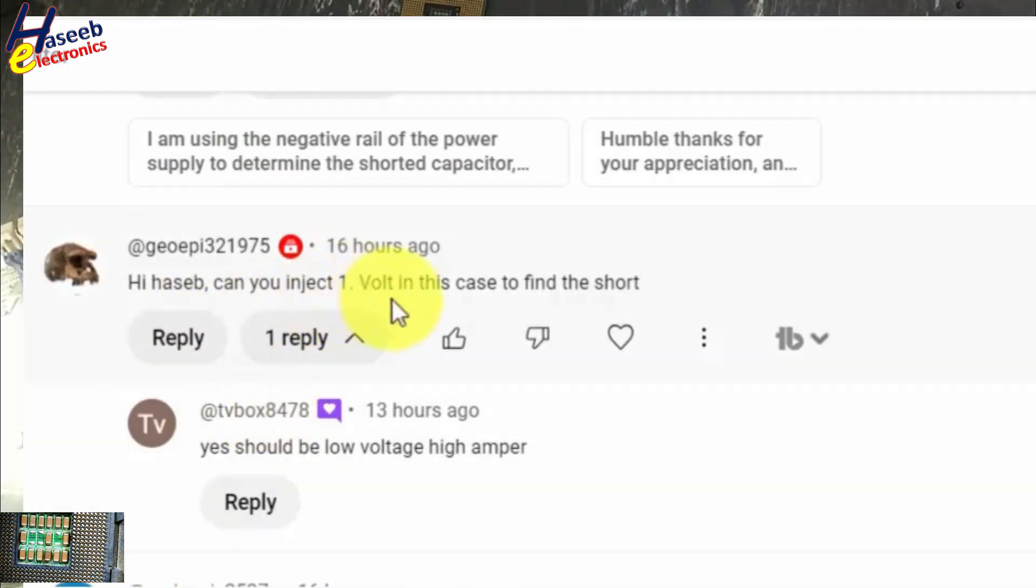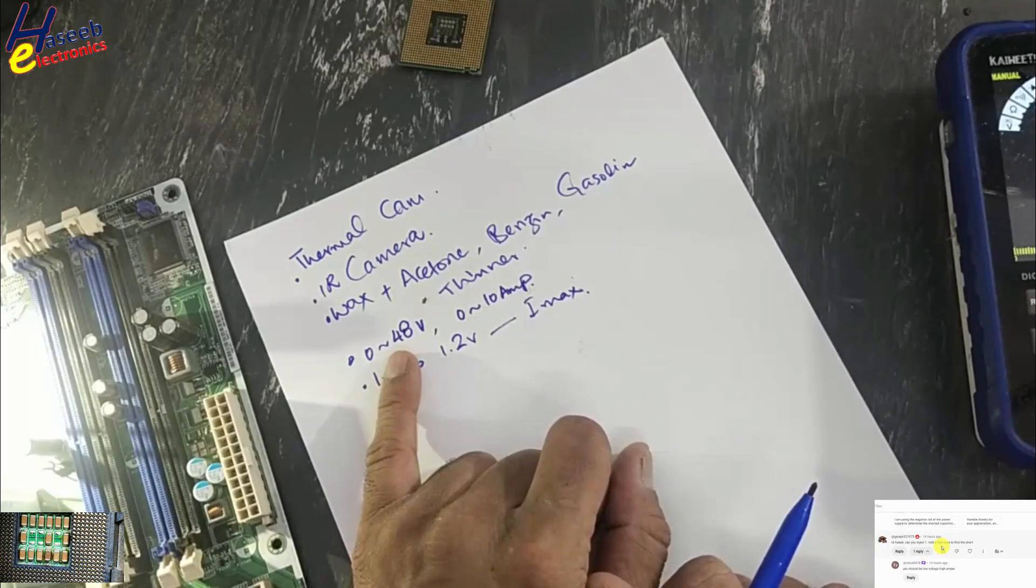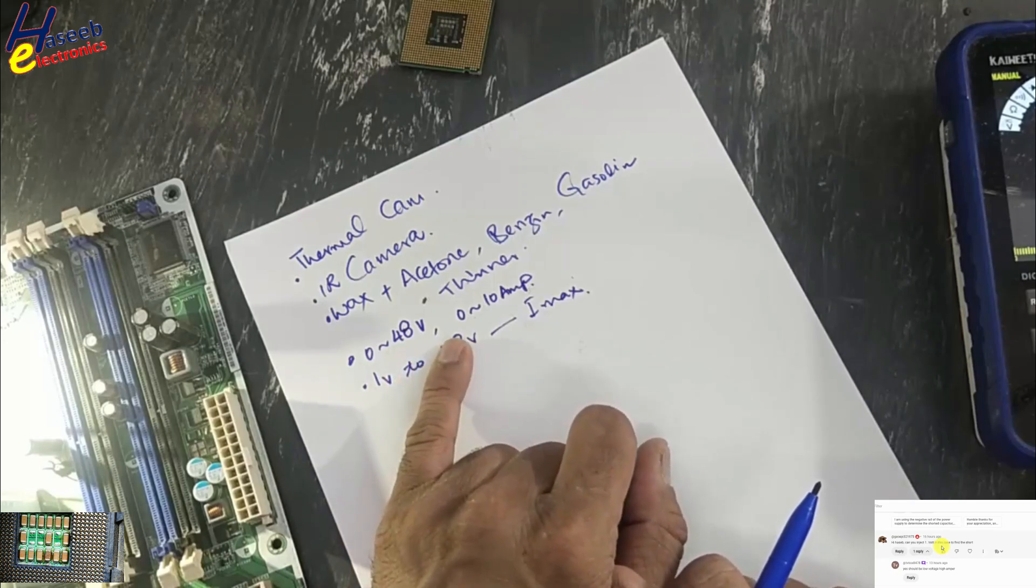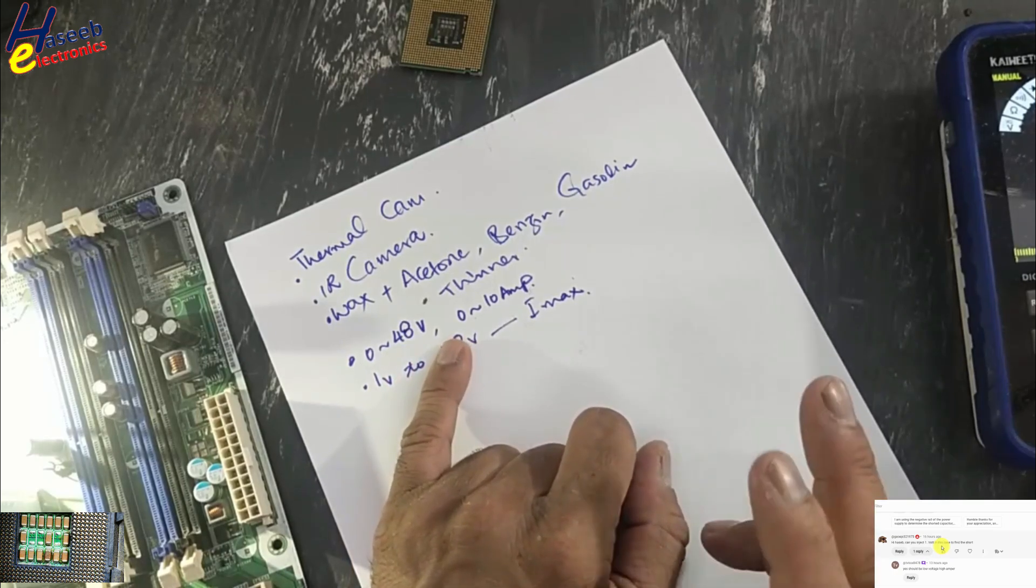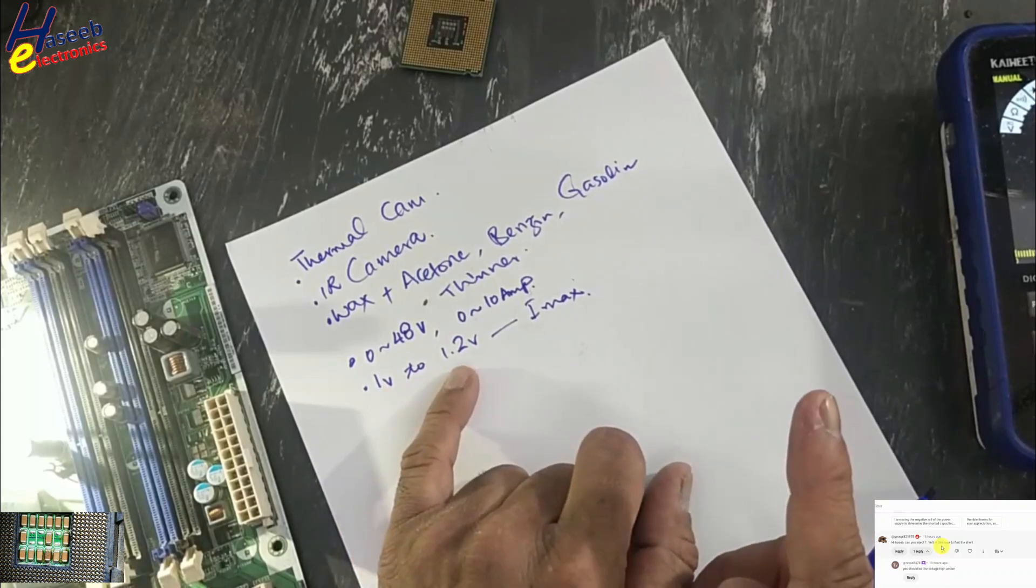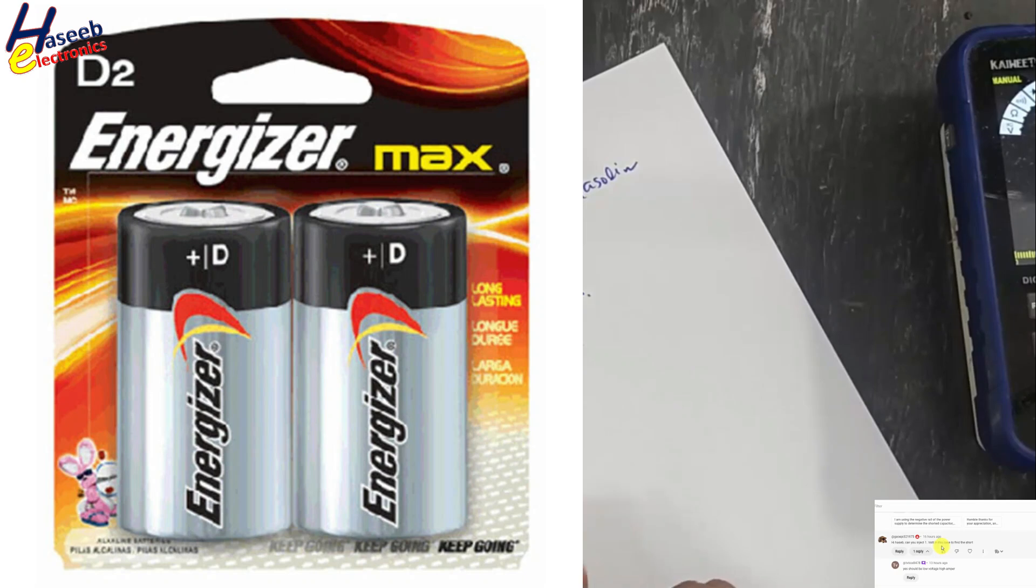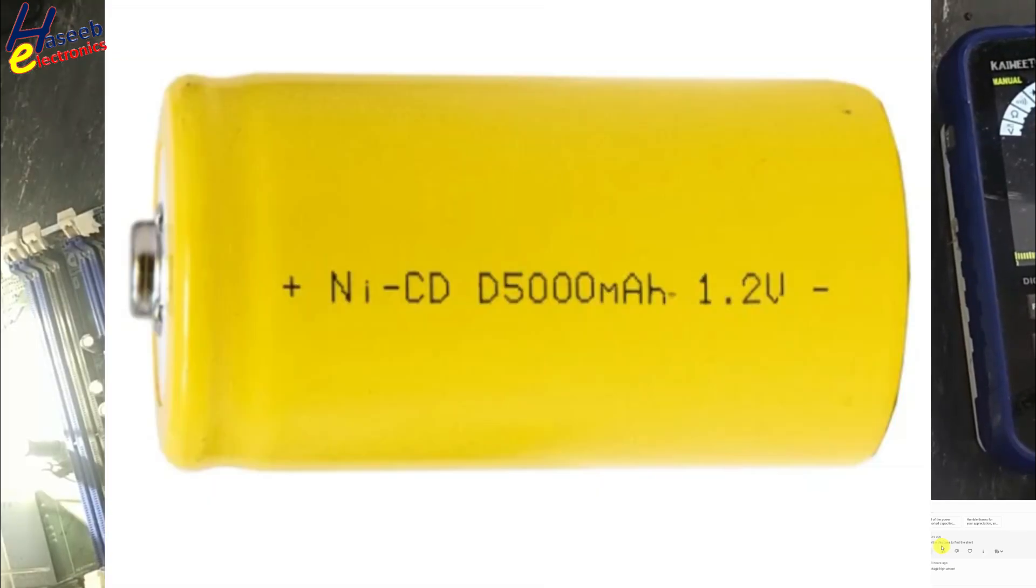Can you inject one volt? In case of finding, yes, that is an excellent technique. I have 0 to 48 volt power supply, adjustable, and 0 to 10 ampere. While detecting a short circuit, most of the time I use one volt and maximum 1.2 volt current to the maximum.